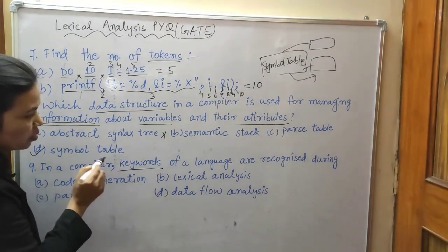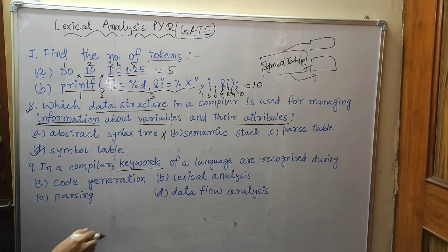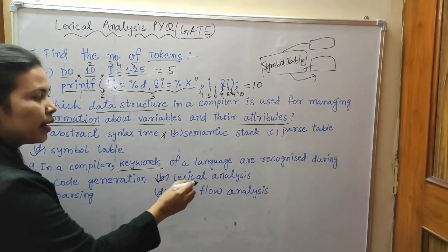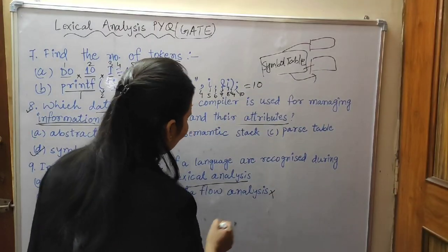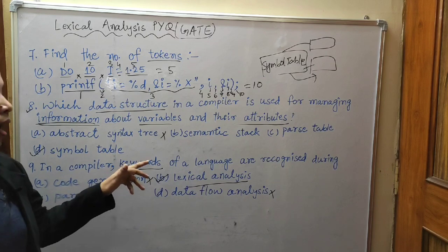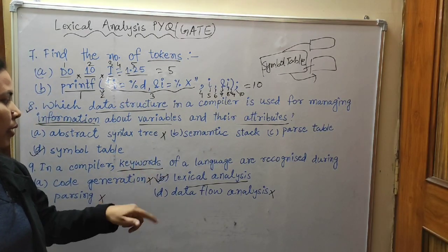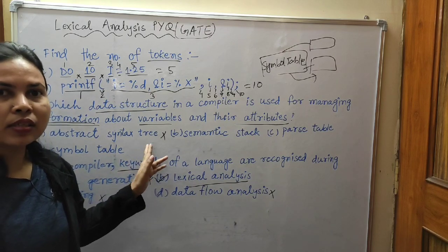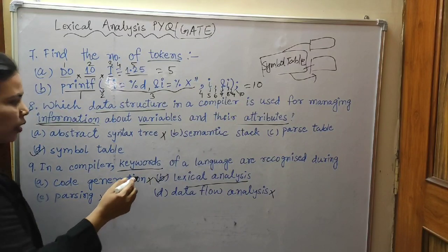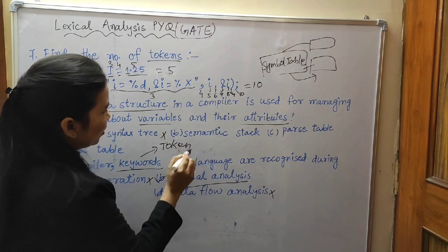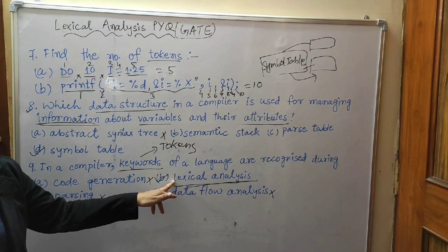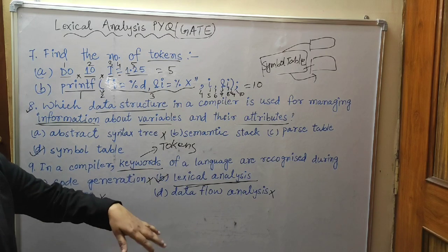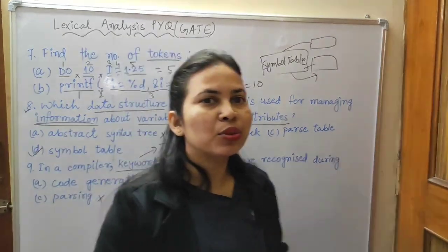Question nine: In a compiler, keywords of a language are recognized during which phase? Code generation is wrong, parsing is wrong, data flow analysis is wrong. Lexical analysis is the correct answer because characters are identified in the lexical analysis phase. Keywords, identifiers, operators, and symbols are all part of tokens, and tokens are generated by the lexical analysis phase.